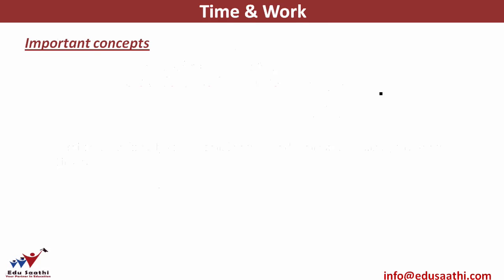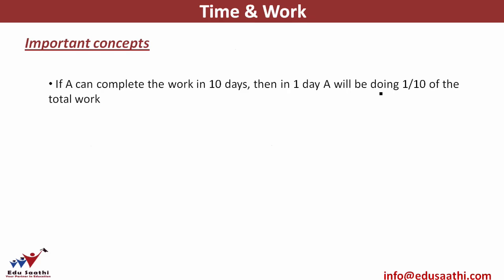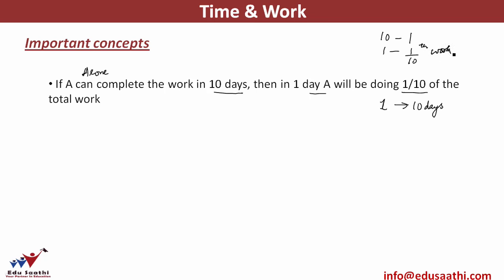Important concepts for solving time and work questions: if A alone can complete a piece of work in 10 days, we assume every day he does the same amount of work. We call the total work as 1 in fractional terms. Using the unitary method: if 1 unit of work is done in 10 days, then in one day A does 1/10th of the work. The work done every day is the same unless otherwise specified.